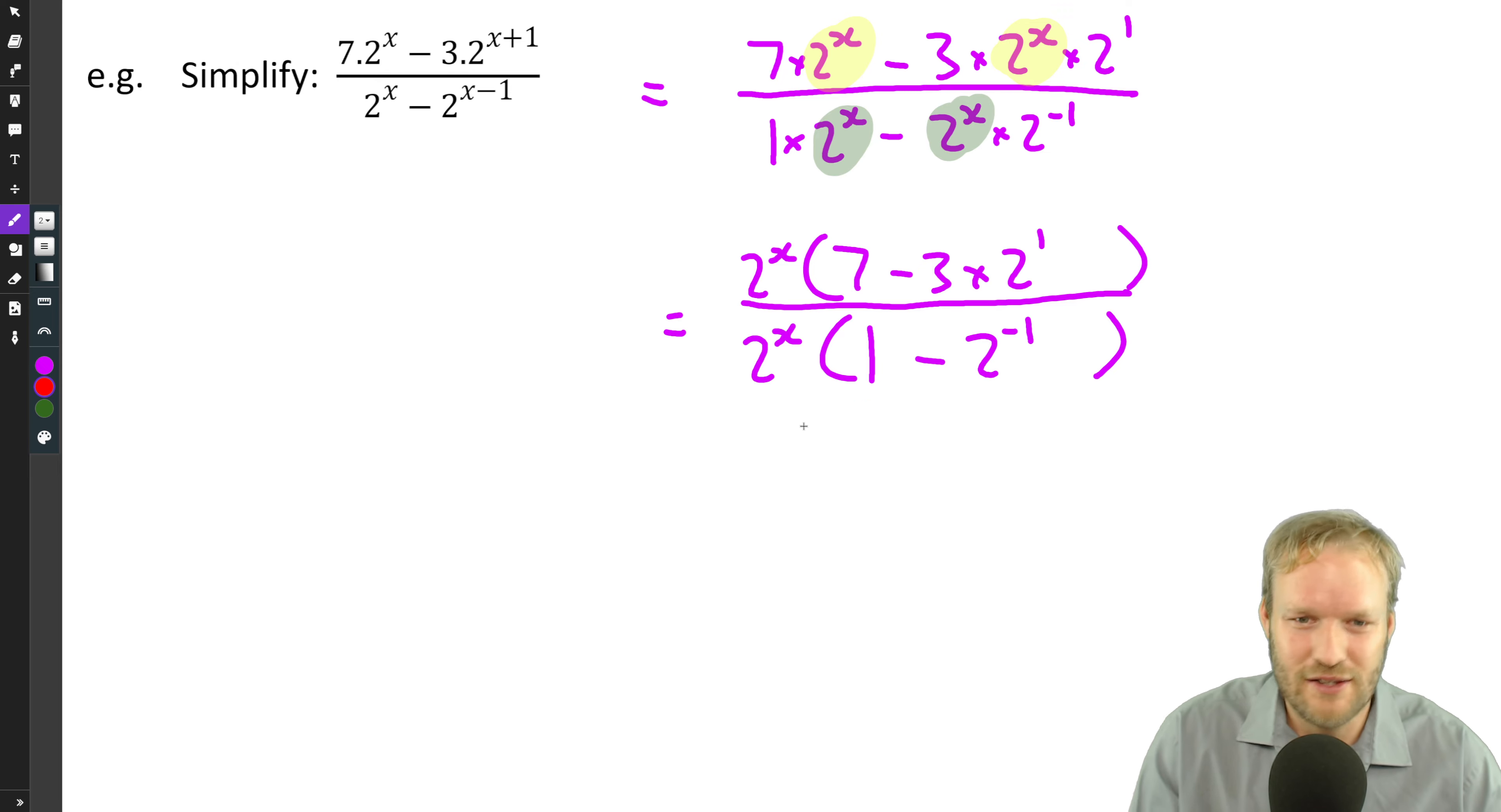Now that we've done that, we can say, oh well, one term over one term means we can safely cancel those out. Two to the x goes in there once, goes in there once.